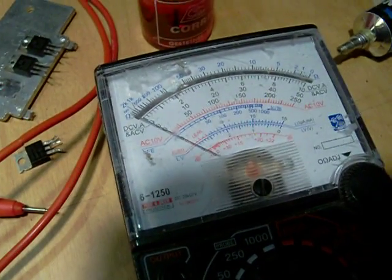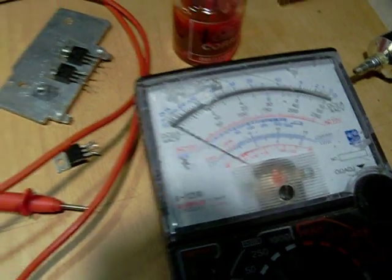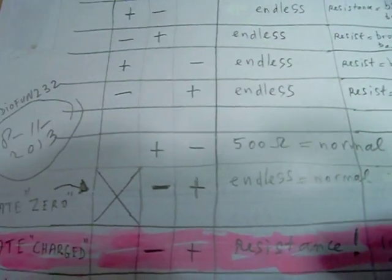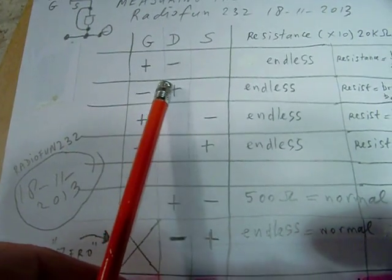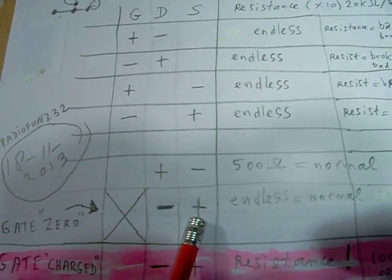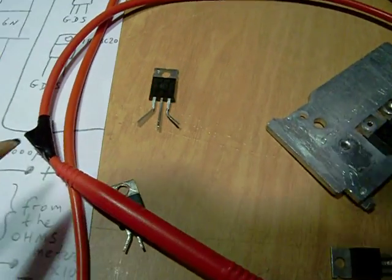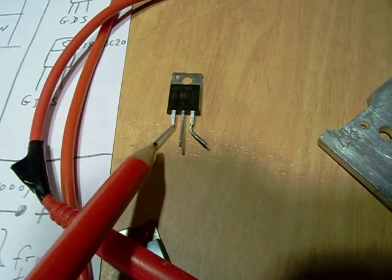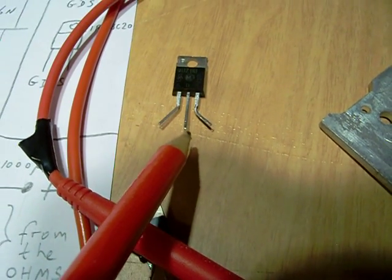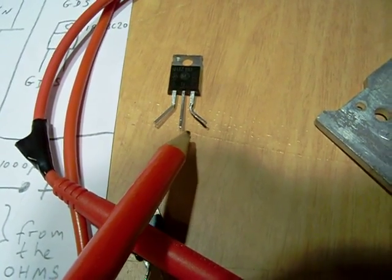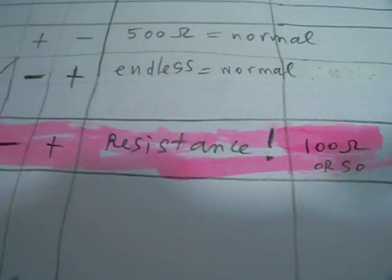I cannot demonstrate it now because I need two hands to make this video. So, an endless resistance when you measure between the drain and the source. But when you tip at first the gate here with the negative lead from the meter, and then measure between the drain and the source, you will find a resistance.